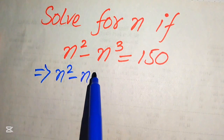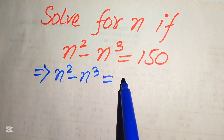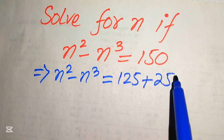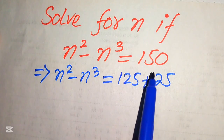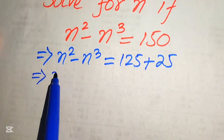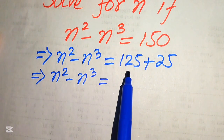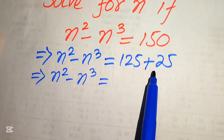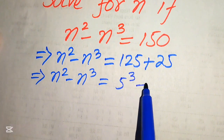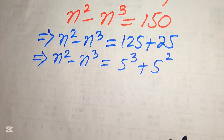First we rewrite the equation: n squared minus n cubed equals 150. We break 150 as 125 plus 25, so 125 plus 25 equals 150. Then we find the prime factors of these two numbers: 125 equals 5 cubed, and 25 equals 5 squared.